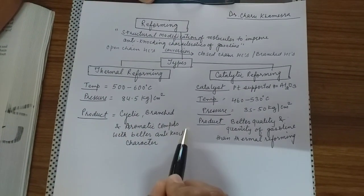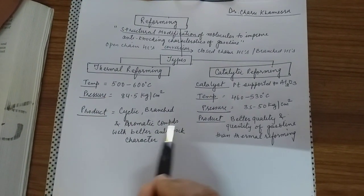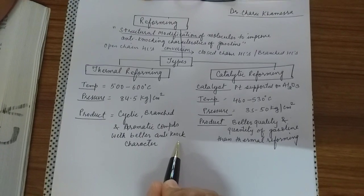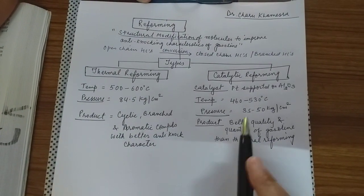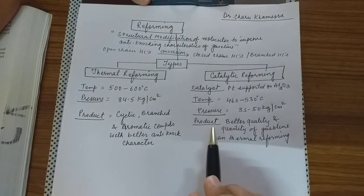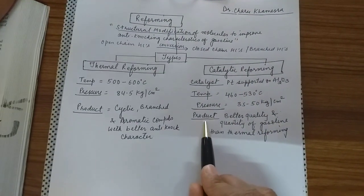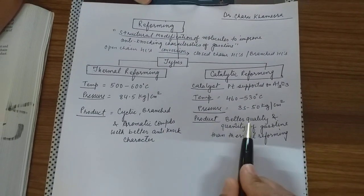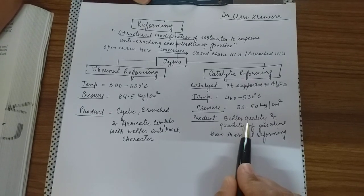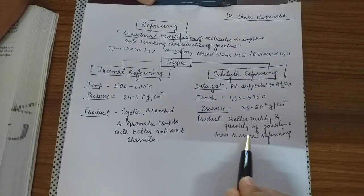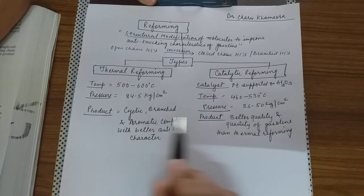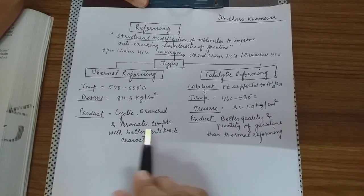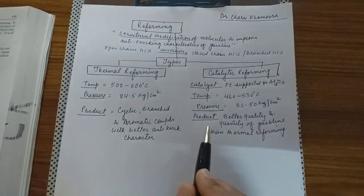The pressure in catalytic reforming is reduced to 35 to 50 kg per centimeter square. The products formed in thermal reforming are cyclic, branched, and aromatic compounds with better anti-knock character, while in catalytic reforming, products are of better quality and quantity of gasoline than thermal reforming.